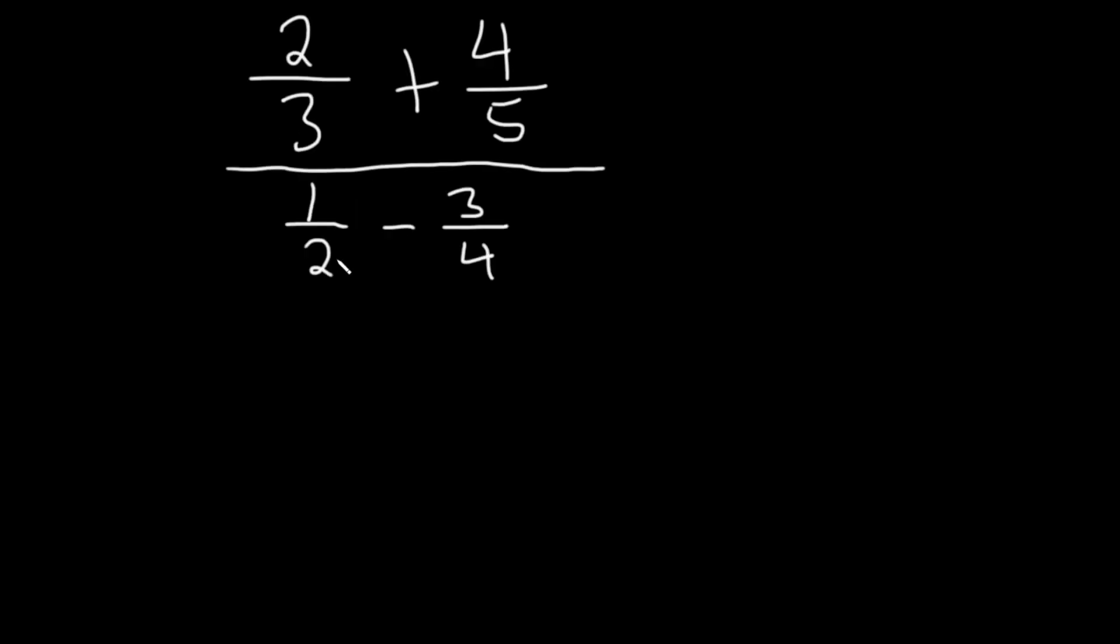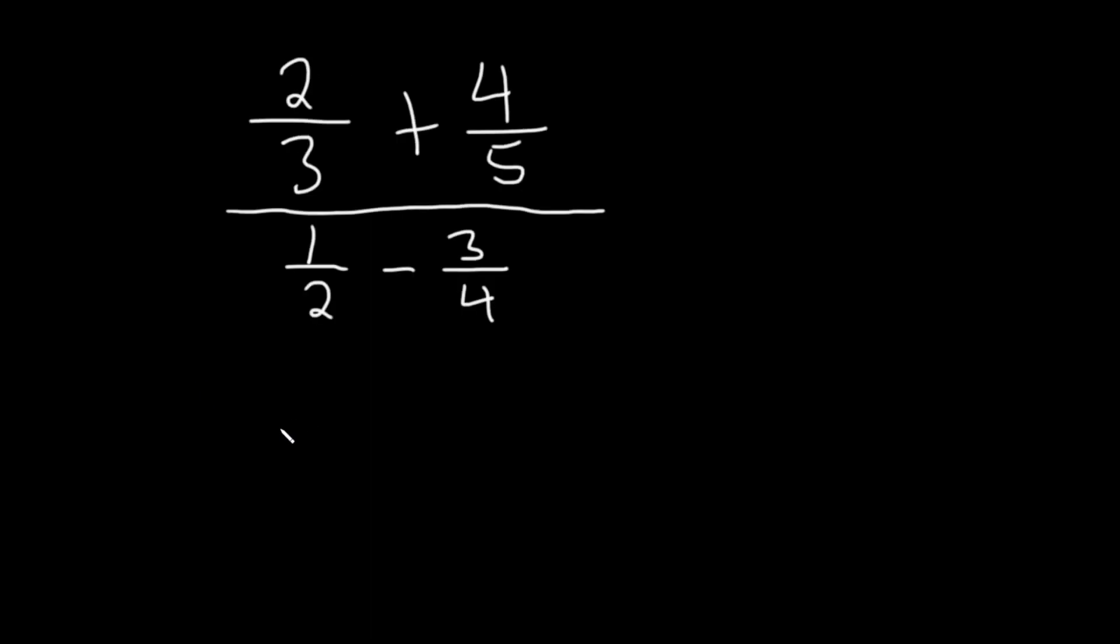Let's just go ahead and get right to it. So in the numerator we want a common denominator, and we're going to use 15 because three times five is 15. So here we're going to multiply by three over three because three times five is 15, and here we're missing a five because five times three is 15.